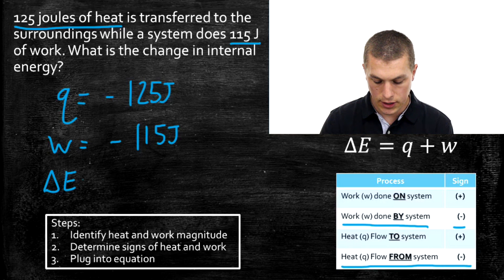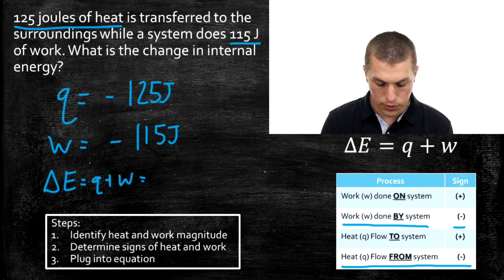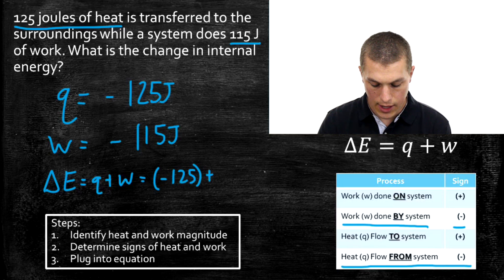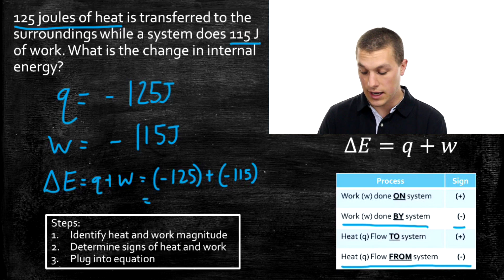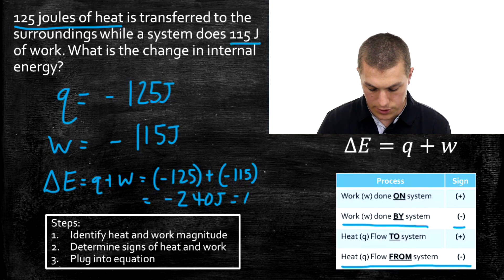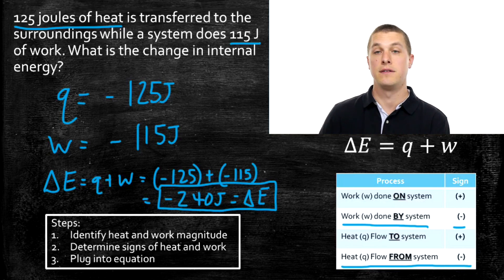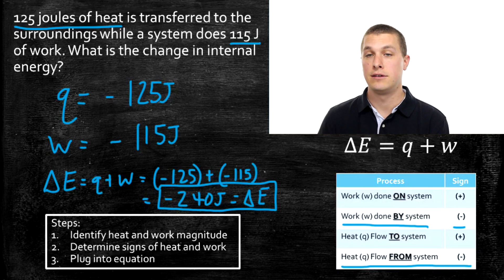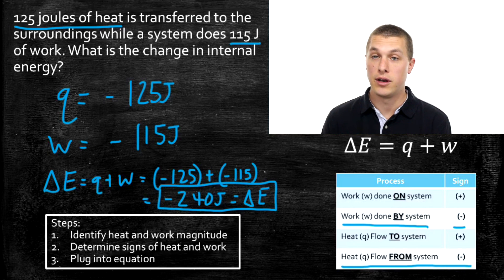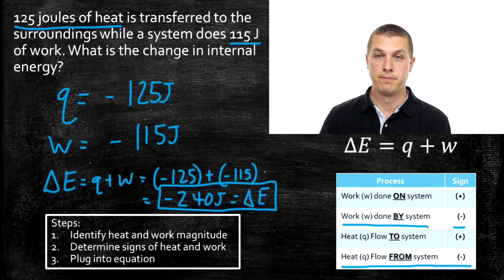Plugging into delta E equals Q plus W, we get negative 125 plus negative 115, which gives us negative 240 joules for our change in internal energy. That negative number means the total energy in the system has decreased — it has a lower capacity to do work or transfer energy now than before. It's no problem getting a negative change in internal energy; that just means overall our system lost energy.